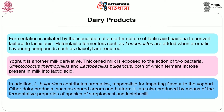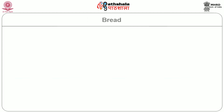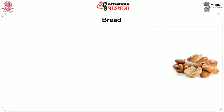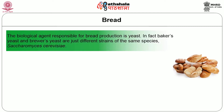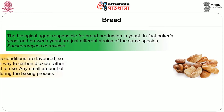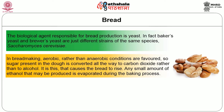Other dairy products such as sour cream and buttermilk are also produced by means of the fermentative properties of species of streptococci and lactobacilli. Bread is also an important product. The biological agent responsible for bread production is yeast. In fact, baker's yeast and brewer's yeast are just different strains of the same species, Saccharomyces cerevisiae. In bread making, aerobic rather than anaerobic conditions are favored, so sugar present in the dough is converted all the way to carbon dioxide rather than to alcohol. It is this that causes the bread to rise. Any small amount of ethanol that may be produced is evaporated during the baking process.